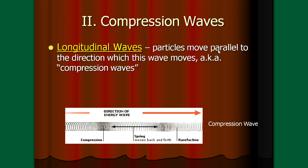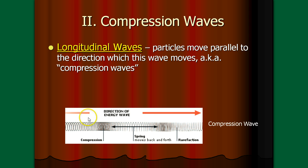Particles move parallel to the direction that the wave moves. They're called compression waves because you get these areas of compression. In this picture, the wave will move from left to right, and the particles move parallel to that direction. So instead of going perpendicularly up and down, they move left and right.